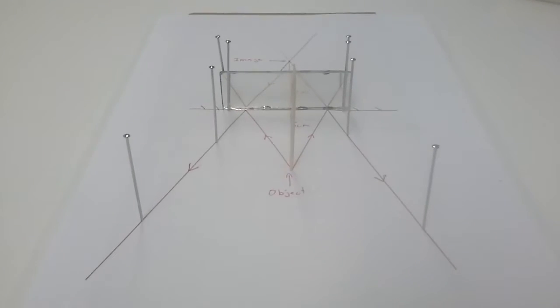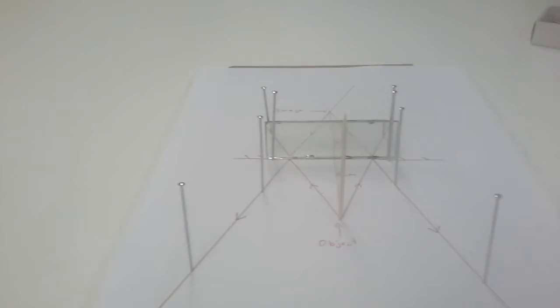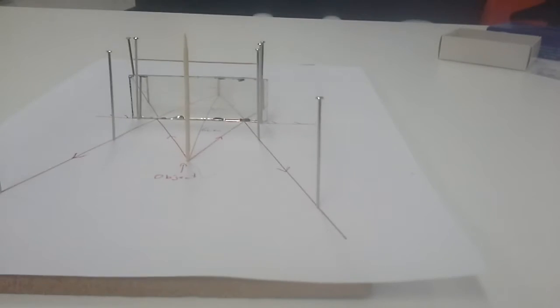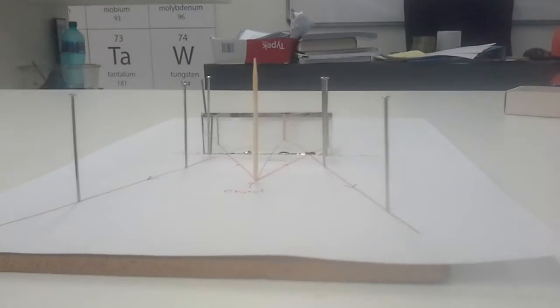Hi guys, today I want to show you an experiment on how you can locate the image of an object in a plain mirror. My object in this case is my toothpick here, and then you can see the image of the toothpick there.